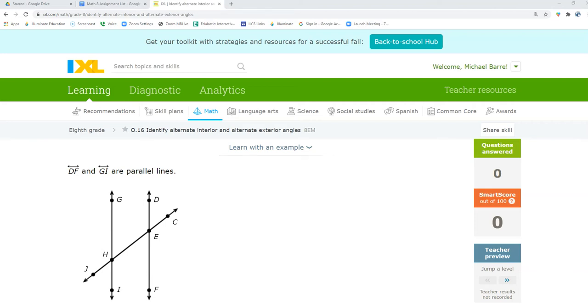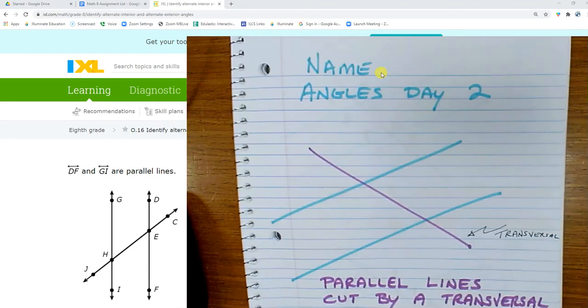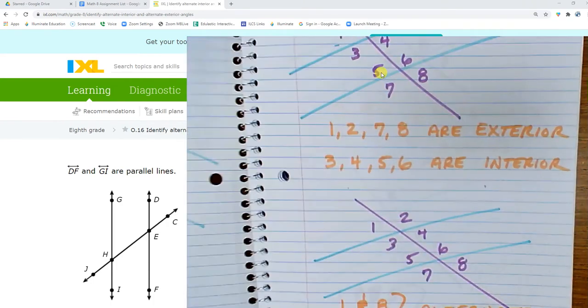This exercise goes with identifying alternate interior and alternate exterior angles. I'm going to highly recommend that you have taken the notes for today because there's a lot of vocabulary in here.